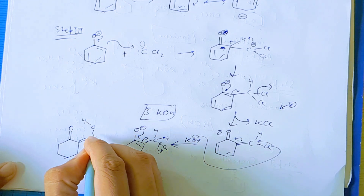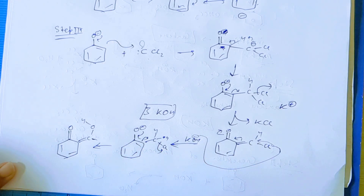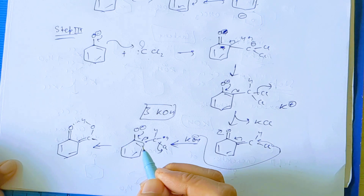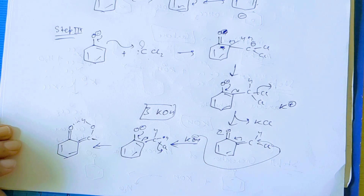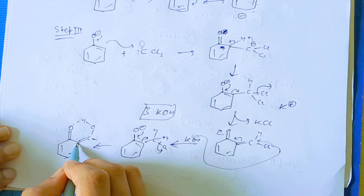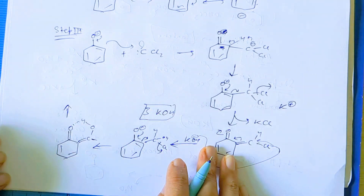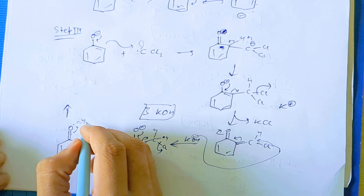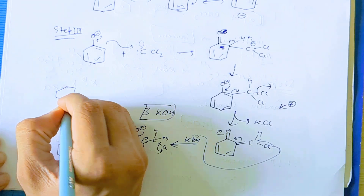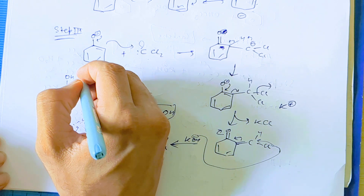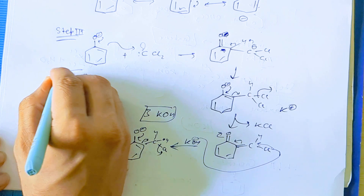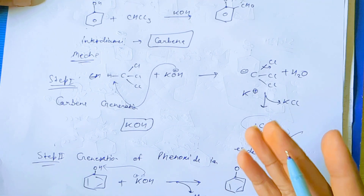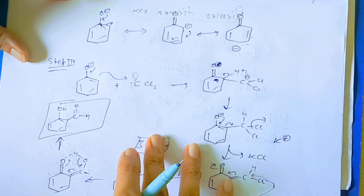Now, why did I draw the alcohol like this? Because here you can see there is hydrogen bonding. That's why we can say the ortho-substituted product will be favored because there is extra stability by hydrogen bonding. In the last step, the oxygen-hydrogen bond will form and this will break, and again you can see a simple salicylaldehyde — ortho-substituted aldehyde, ortho-substituted phenol — that is salicylaldehyde, the main product. From this reaction, we get information that carbene is generated, carbene is an electron deficient species, and electrophilic substitution reaction occurs. Thank you.